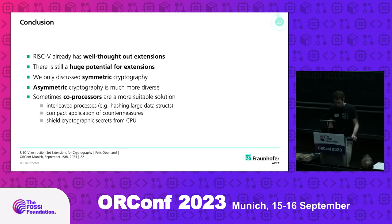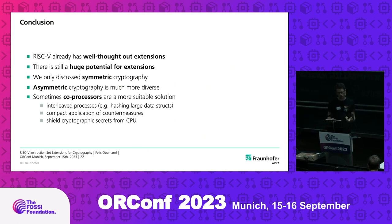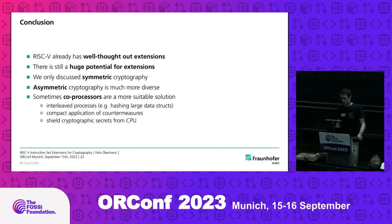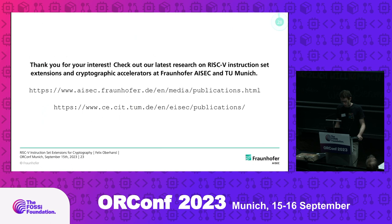To conclude: RISC-V already has some well-thought-out extensions, but there's also still a huge potential. We have new algorithms on both the symmetric and asymmetric side of cryptography which we haven't discussed at all. And I should also mention that coprocessors are sometimes a more interesting solution than instruction extensions. Thank you for your interest, and feel free to check out our work on this topic.